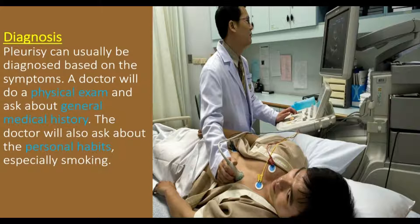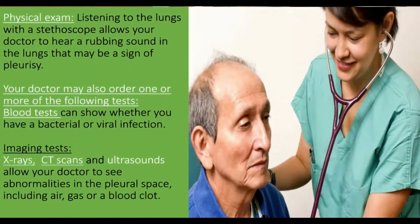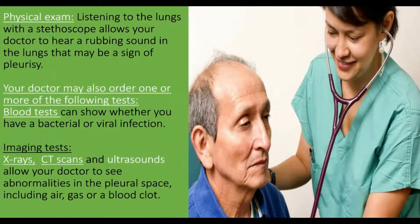The first priority in diagnosing pleurisy is to determine the location and cause of the inflammation or swelling. Pleurisy can usually be diagnosed based on the symptoms. A doctor will do a physical exam and ask about general medical history and personal habits, especially smoking. Listening to the lungs with a stethoscope allows the doctor to hear a rubbing sound that may be a sign of pleurisy.